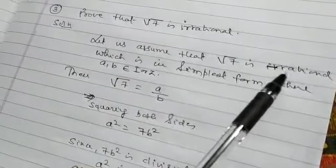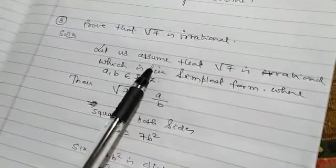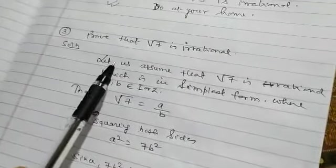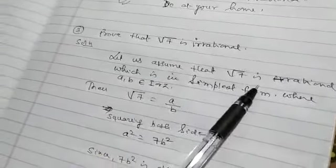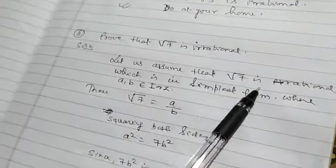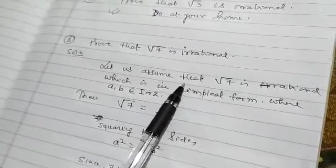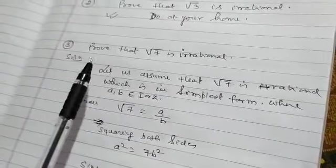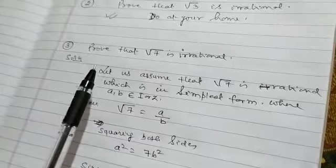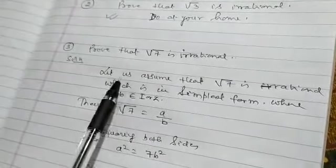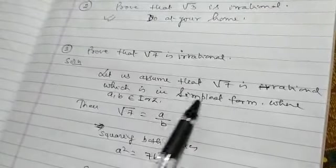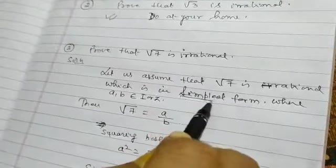So now, how will you proceed? This is the question. Let us assume that root 7 is rational. This is a contradictory method, so we are considering - you have to prove irrational, but we suppose rational. That is why it is known as contradictory, the opposite.